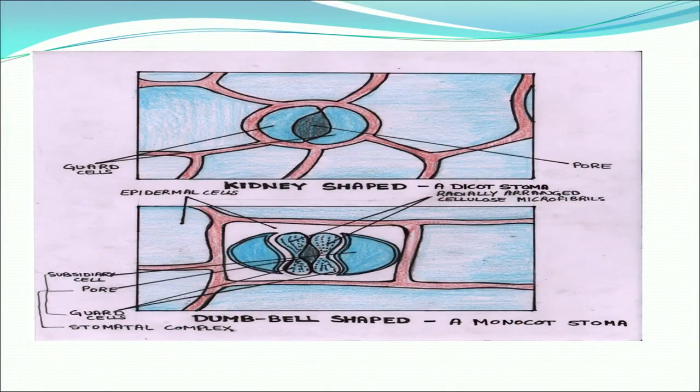When the turgor pressure of the guard cell decreases, inner walls sag, leading to closure of the stomatal space — hence the stomata closes. In dicotyledonous leaves, the guard cells are kidney-shaped and stomatal opening is regulated by guard cells. In monocotyledonous leaves, the guard cells are dumbbell-shaped.